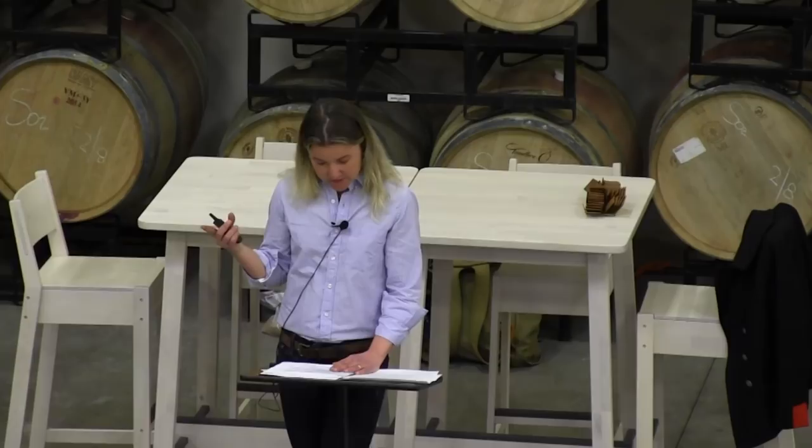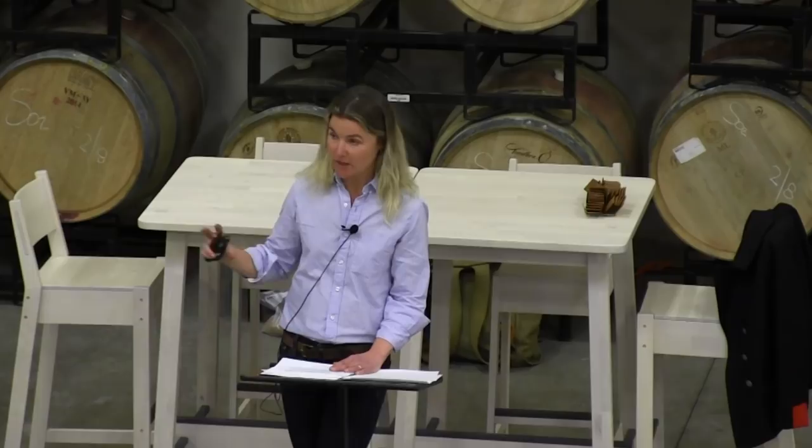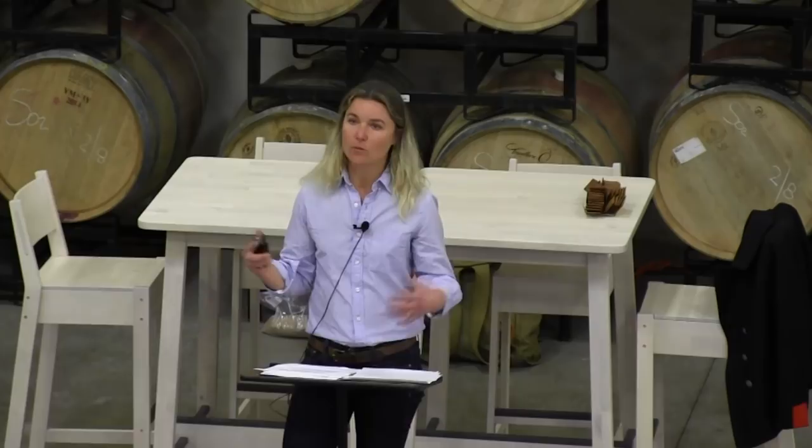Glyphosate chelates positive cations and it's the immobility of those ions that shuts down the function of the shikimate pathway by destabilizing one enzyme — the EPSPS enzyme, also known as the 5-enolpyruval-shikimate-3-phosphate synthase enzyme. That shikimate pathway is the biological pathway in plants and what science calls the lower organisms — like bacteria and fungi — that synthesizes the aromatic amino acids tryptophan, tyrosine, and phenylalanine. Only lower organisms have that pathway, but we all need those amino acids.